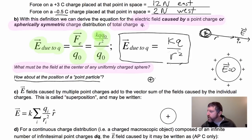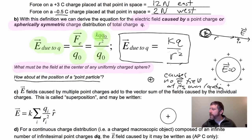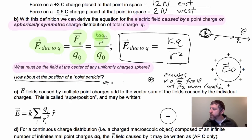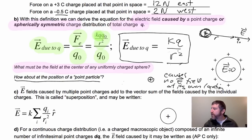A charge cannot cause a field that it itself is affected by, so we use zero. This is consistent with the spherical case where the field is zero at the center. Otherwise our math completely blows up, and conceptually this charge cannot push itself around.